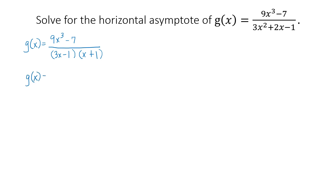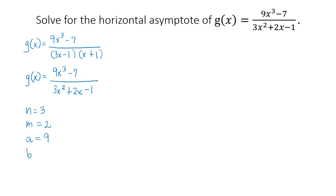Let's rewrite the given. The degree of the numerator n is 3, and the degree of the denominator m is 2. The leading coefficient of the numerator a is 9, and the leading coefficient of the denominator b is 3. Comparing n and m: n, which is 3, is greater than m, which is 2. Hence, there is no horizontal asymptote, but there is an oblique or slant asymptote.